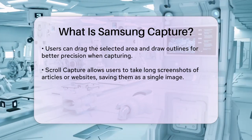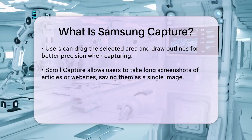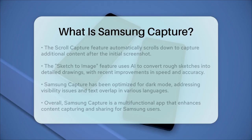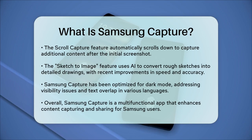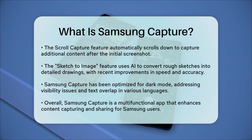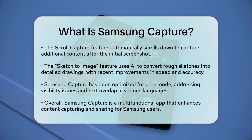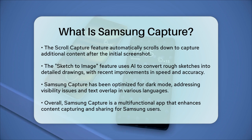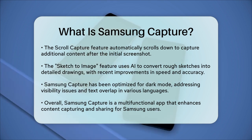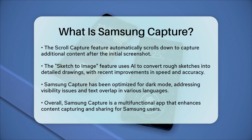The app has also seen improvements in its Sketch to Image feature, which uses AI to quickly transform rough sketches into proper drawings. This feature, along with the Smart Select tool, has been made faster and more accurate in recent updates.